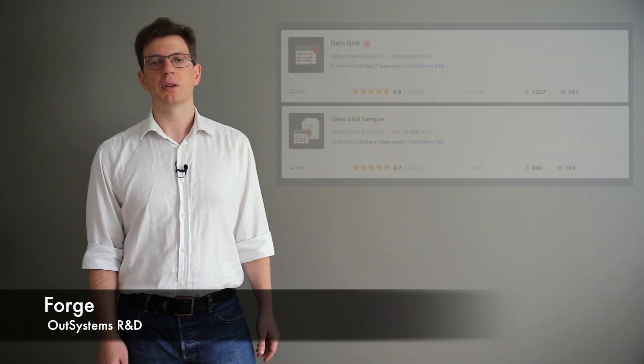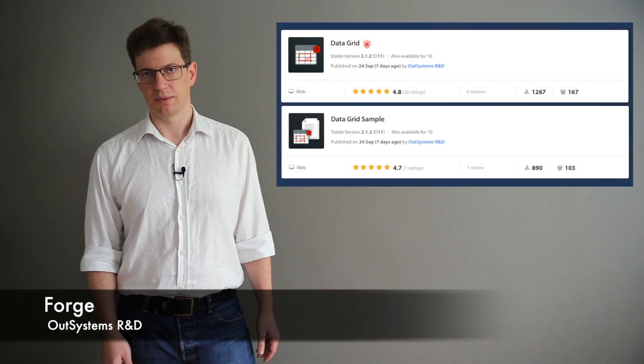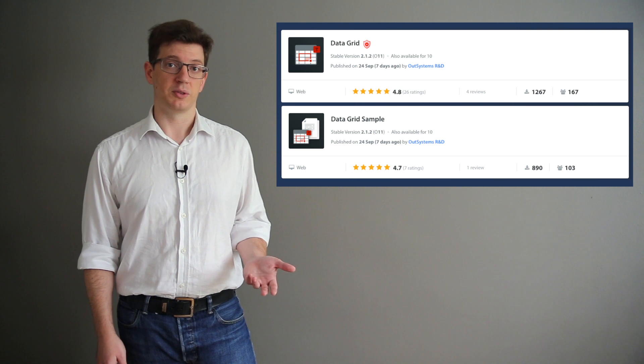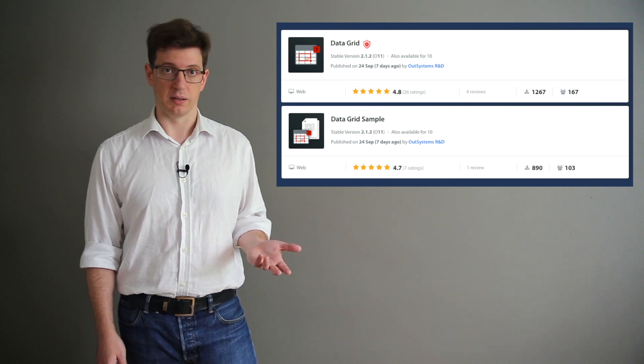As for Forge releases, OutSystems is present again with the release of the new version of the DataGrid component. On this new version, the grid column now supports decimal numbers, and the functionality for the suppress menu option is now working as expected. Also, a few style tweaks have been made to the component.